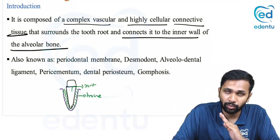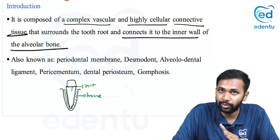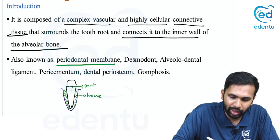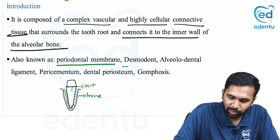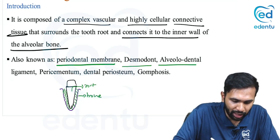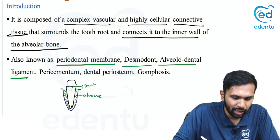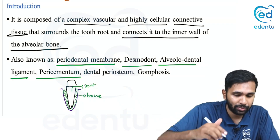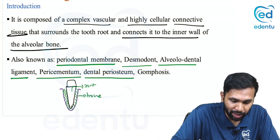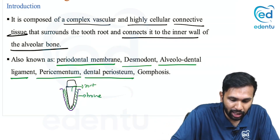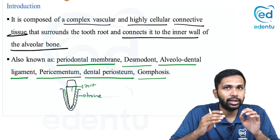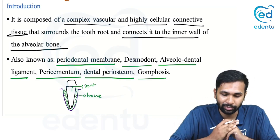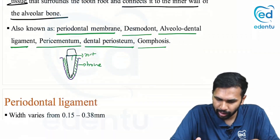The periodontal ligament is also known by various other terminologies: periodontal membrane, desmodont, alveolodental ligament, pericementum (meaning surrounding the cementum), dental periosteum, and gomphosis. All these are other names for the periodontal ligament.